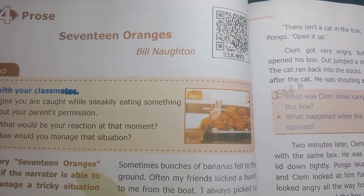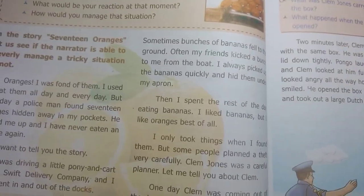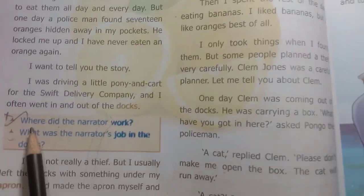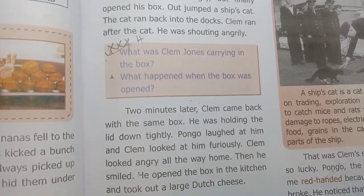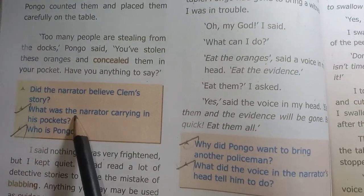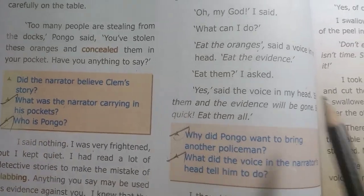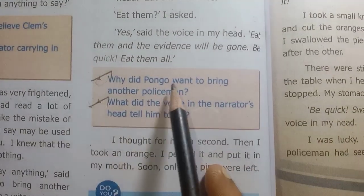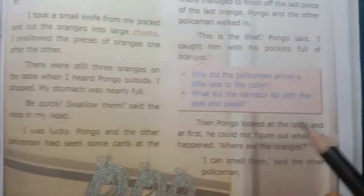Unit 4 Prose: Oranges. Page number 88 — where did the narrator work? That is important. What was Clem Jones carrying in the box? That is repeated — a half-yearly question paper, previous year. What was the narrator carrying in his pockets? How is Pongo? These two important. Why did Pongo? The question is important.